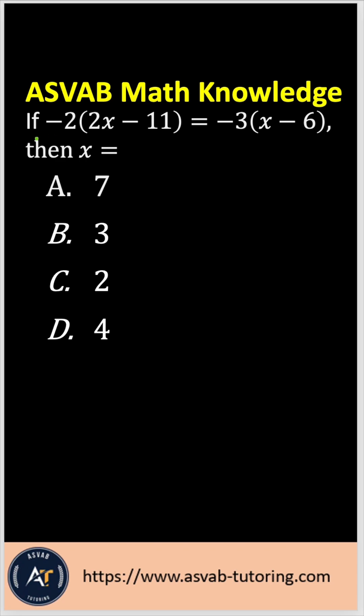The question asks: if -2(2x - 11) = -3(x - 6), then what is the value of x? So you have to solve this equation. Make sure that you watch the video carefully and practice multiple times in order to get used to solving this type of problem. Most likely you'll see a few solving equation problems in the actual ASVAB test.